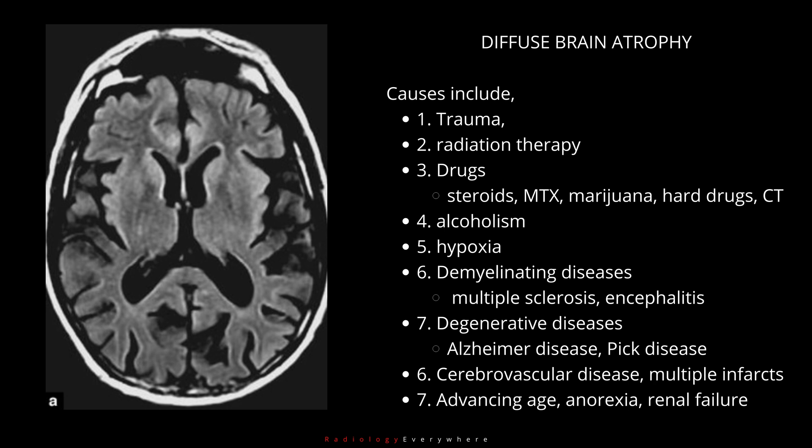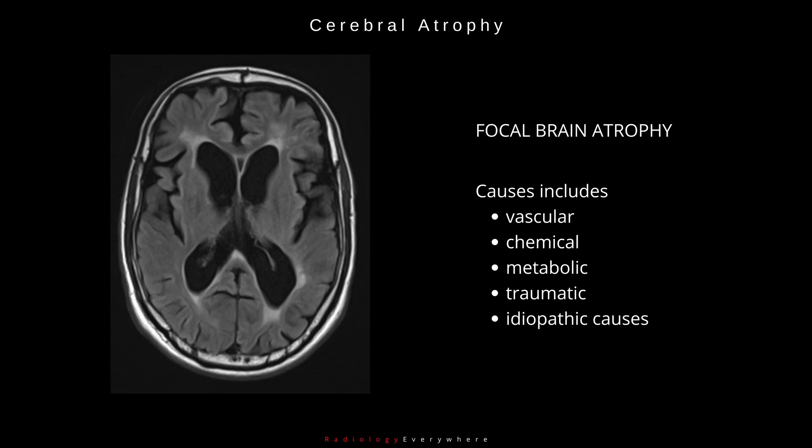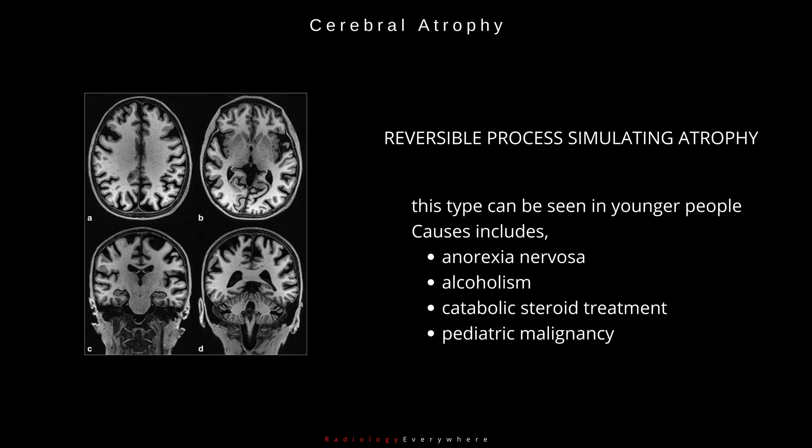9. Advancing age, anorexia, and renal failure. B. Focal brain atrophy — causes include vascular, chemical, metabolic, traumatic, and idiopathic causes.